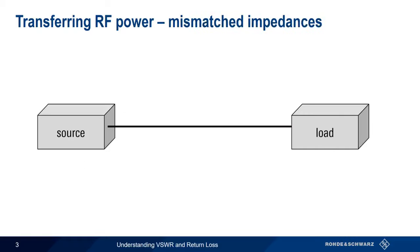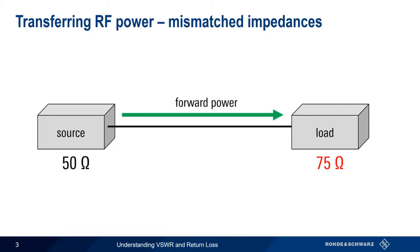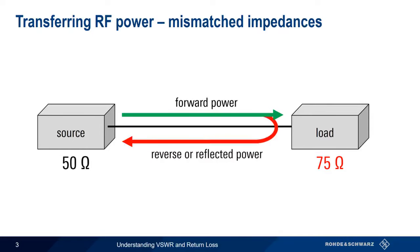So what happens if there's a mismatch or difference between the source and load impedances? In this case, the impedance mismatch causes some of the power from the source — the forward power — to be reflected from the load back towards the source. This power is called the reflected, or reverse power. Reflected power is almost always undesirable.